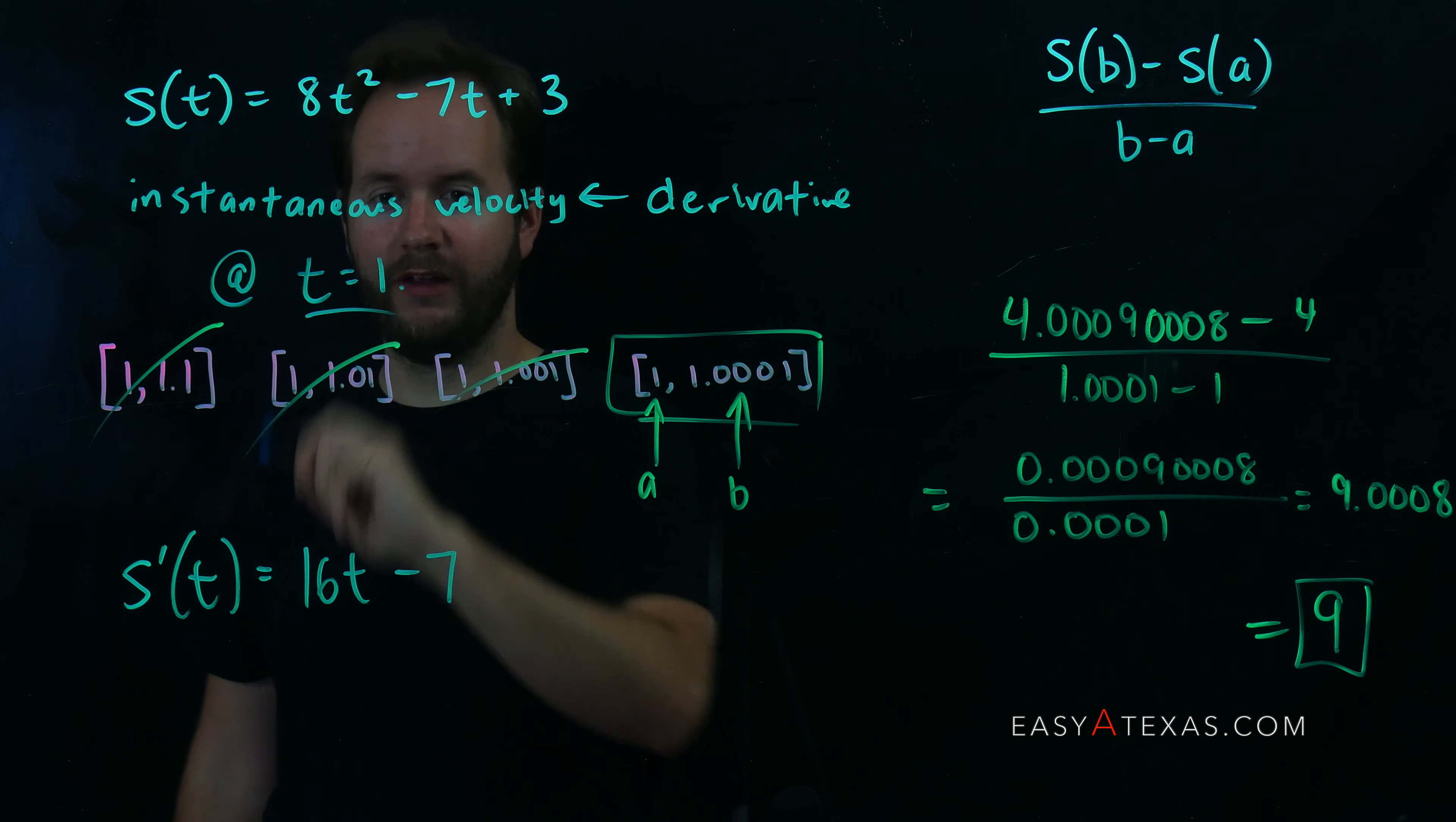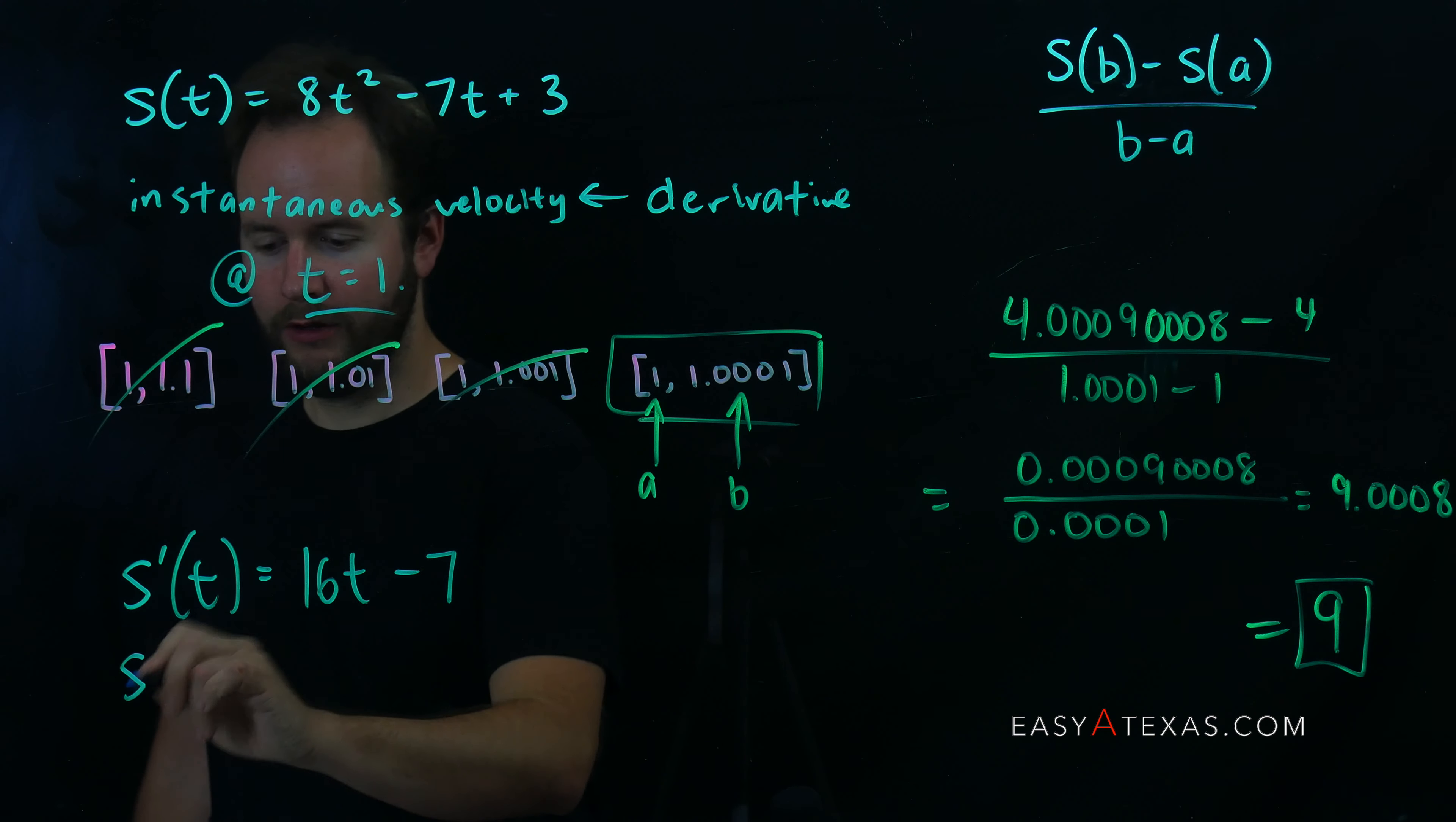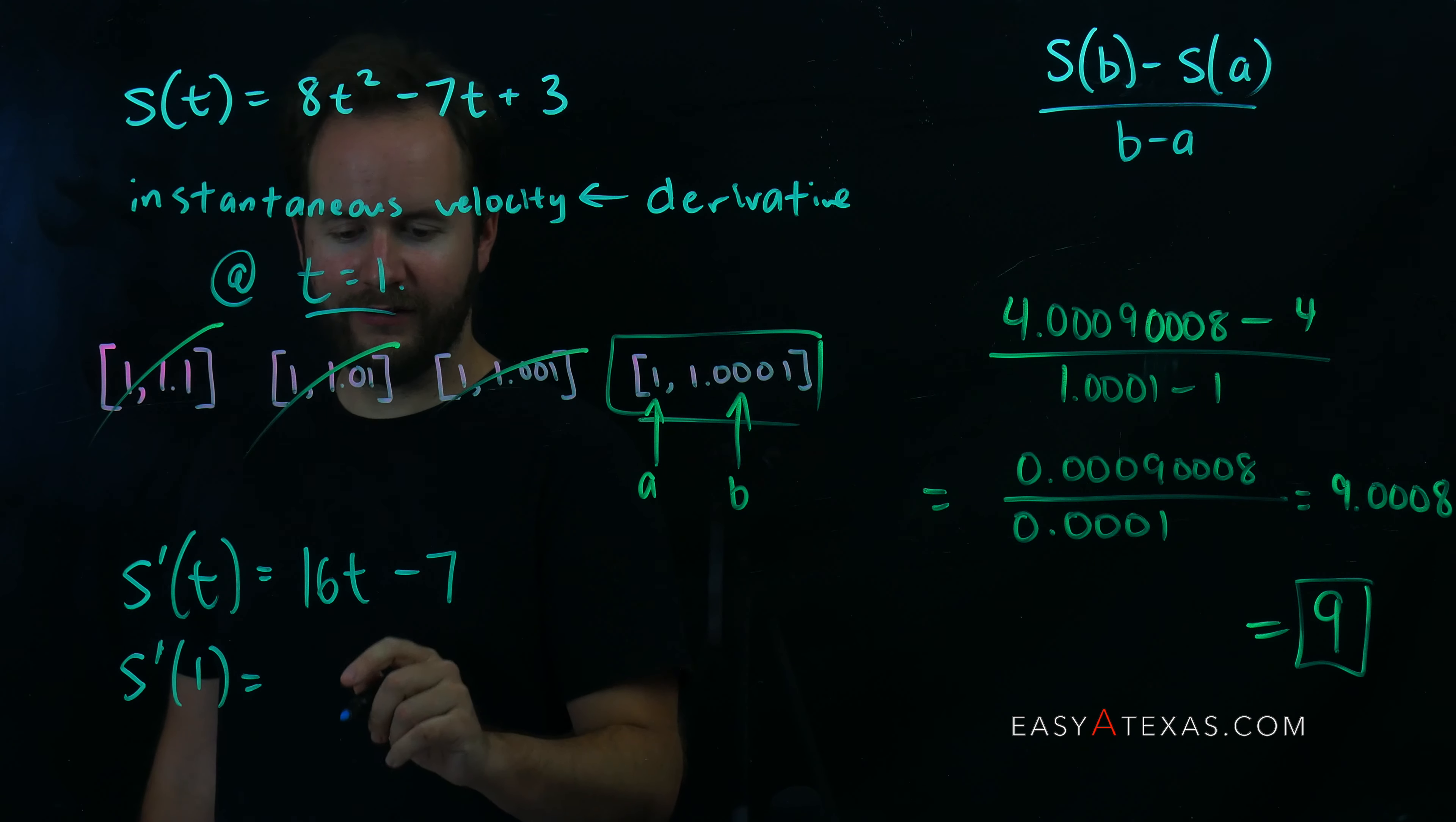And now that I have the derivative, I'm supposed to find the velocity at t equals 1. I'm going to go ahead and plug in 1 into my derivative. And this is going to give me 16 times 1, which is 16 minus 7, which is 9.